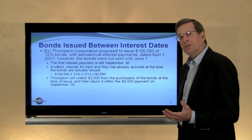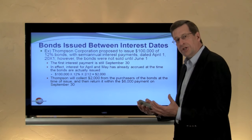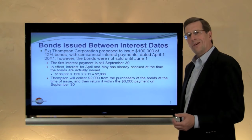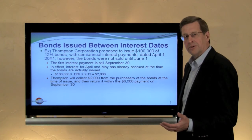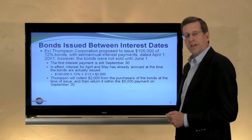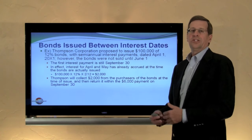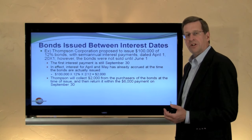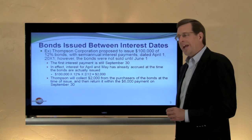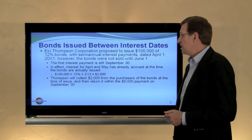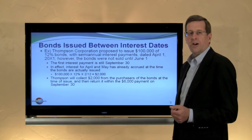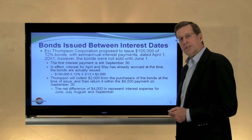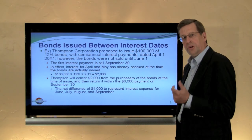When Thompson issues the bonds, they're going to collect, in addition to the issue price, the accrued interest of $2,000. Four months later, they're going to pay a full six months of interest, essentially giving back the $2,000 and $4,000 more. This is because bonds customarily tie their interest payment dates to a corresponding schedule of payments, so the exchange of $2,000 simplifies bookkeeping — no need to track on a daily basis who holds bonds or how long they've been outstanding. The net difference of $4,000 corresponds to interest for June, July, August, and September.